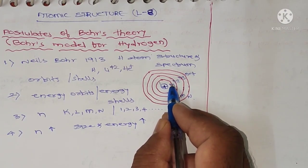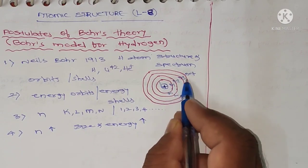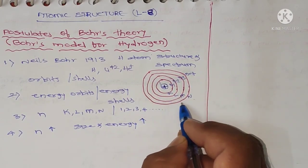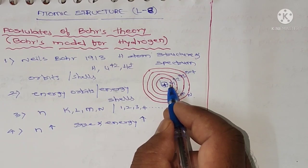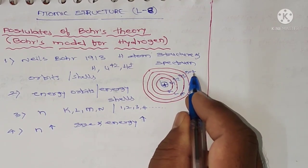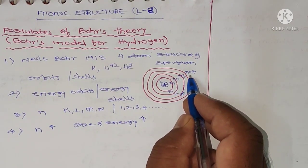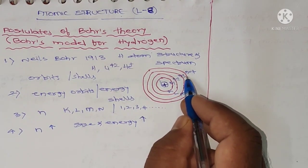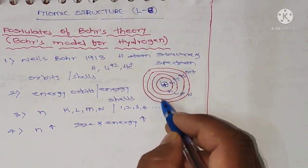For example, comparing the first shell and fourth shell: the fourth shell has more size and more energy than the first shell. As shown in the diagram, the first shell (N=1) is smaller and the fourth shell (N=4) is larger — if N value increases, the size and energy of the orbit increase.